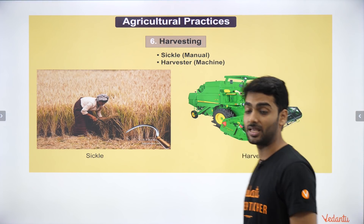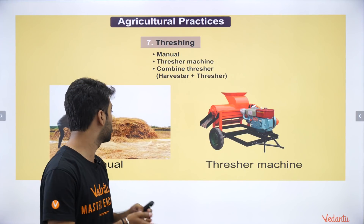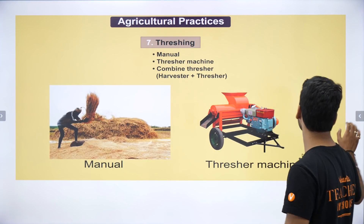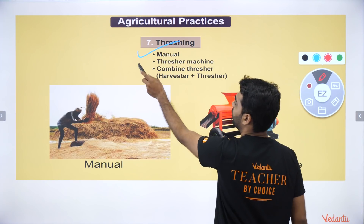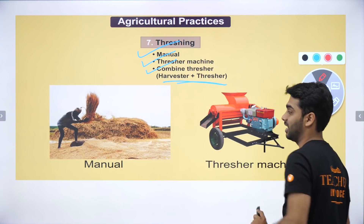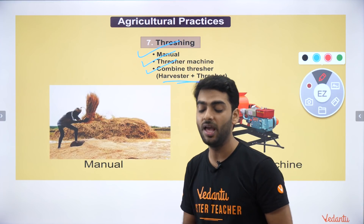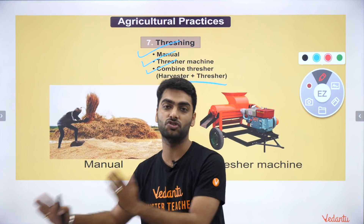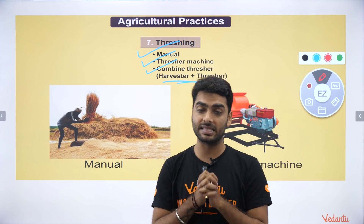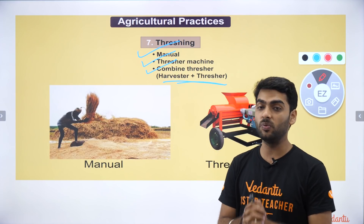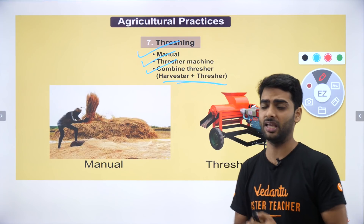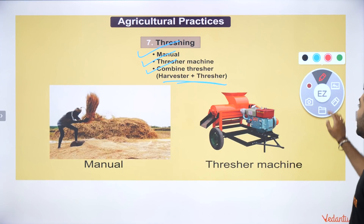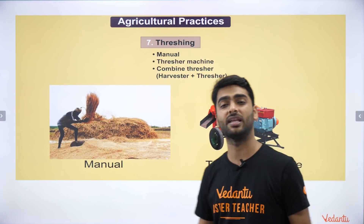Threshing is when you separate the husk from the grain. Threshing can be done manually, using a thresher machine, or with a combined harvester-thresher — a very modern machine where both harvesting and threshing happen together. This machine harvests and threshes simultaneously, giving you the cleaned grain directly. These machines have made farmers' lives much easier, though they require significant investment.